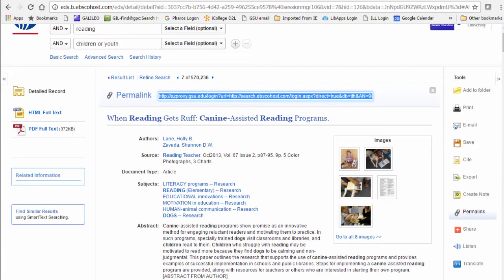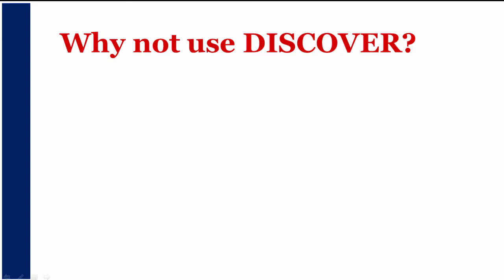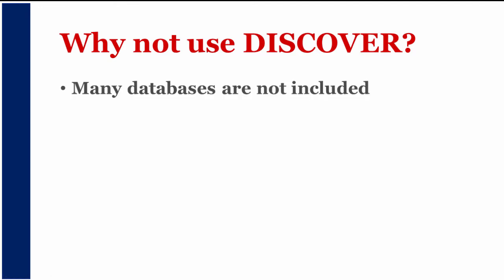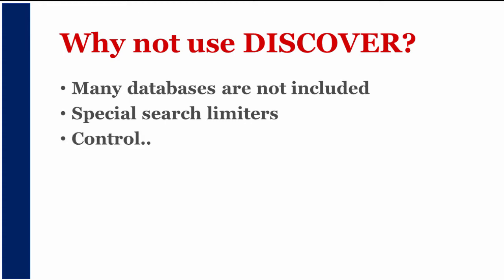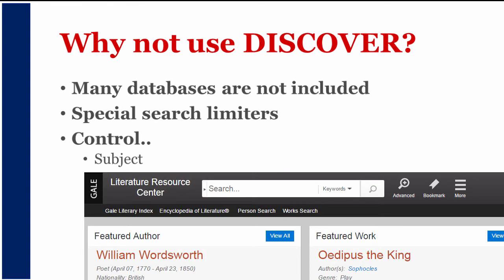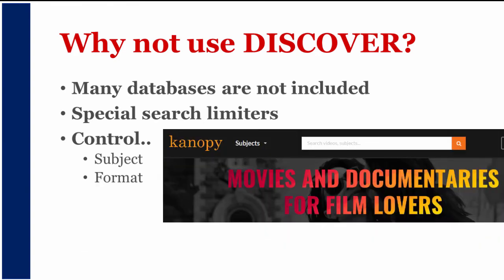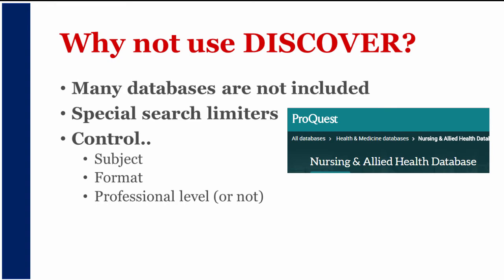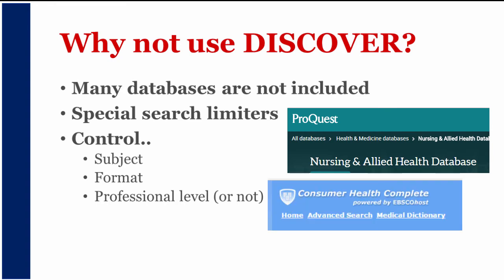But there are times you may not want to use the Discover tool. The Discover tool doesn't include all of our databases. Individual databases may give you specialized search limiters that are not included in the Discover search. And using specific databases instead of the Discover search can help you control the type of information you find. Some databases only contain information on certain subjects, limit to certain formats, or contain information oriented to subject experts or non-professionals.